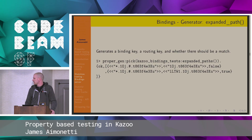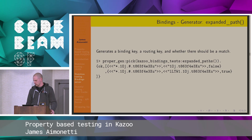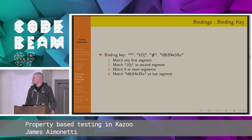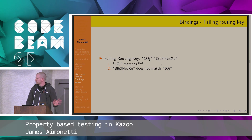What it ended up with was creating binding keys where you have the wildcards, and then you have the routing keys, which are the actual keys you're matching on. In this case, it also generates whether it should match or should not match. This breaks down the different segments and how you would interpret what it generated, how it matches, and how it doesn't match.